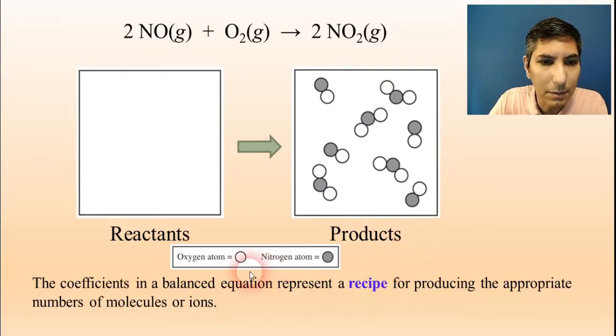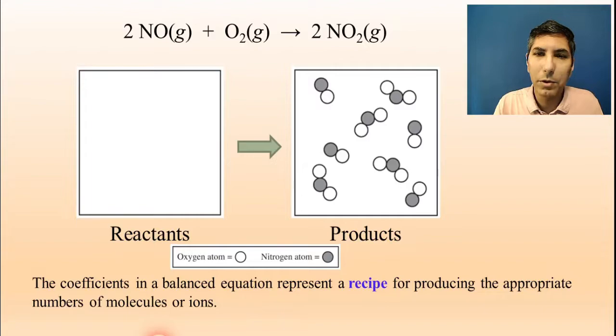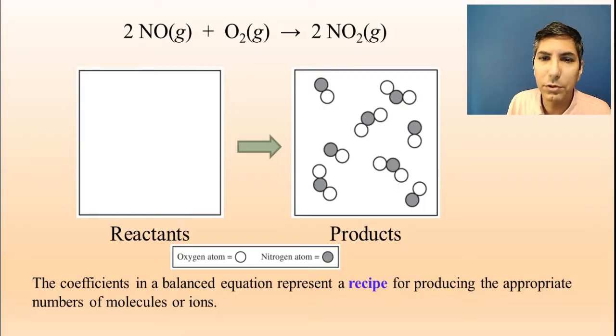It gives us kind of a legend here at the bottom. It shows us that the oxygen atoms are the white circles and the nitrogen atoms are represented by the gray circles. We have to remember that when you have a balanced equation, those coefficients represent a recipe for producing the appropriate numbers of molecules or ions or atoms or whatever you're trying to make in the reaction.